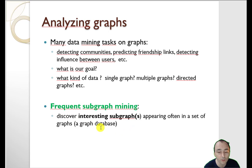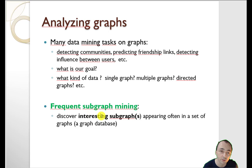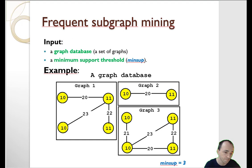In frequent subgraph mining, which I will talk about today, the goal is to find some interesting subgraphs where interesting means the subgraph appears many times in a set of graphs — what we call a graph database. So we have many graphs and we try to find a subgraph that appears many times. We call these the frequent subgraphs.